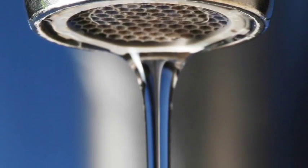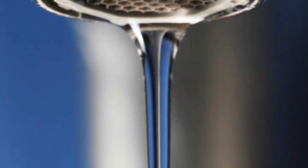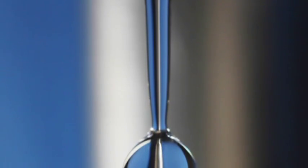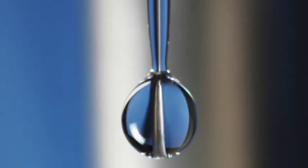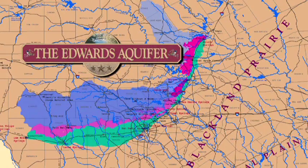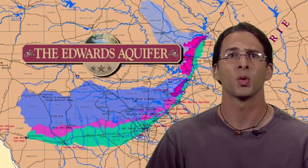Our treatment of these and other karst features will determine the quality of our water. If we protect our karst features, then our water will be clean. However, if we abuse our karst features, our water is in danger. San Antonio only has one water source, the Edwards Aquifer, and if we contaminate it, who knows where we'll get our water from?